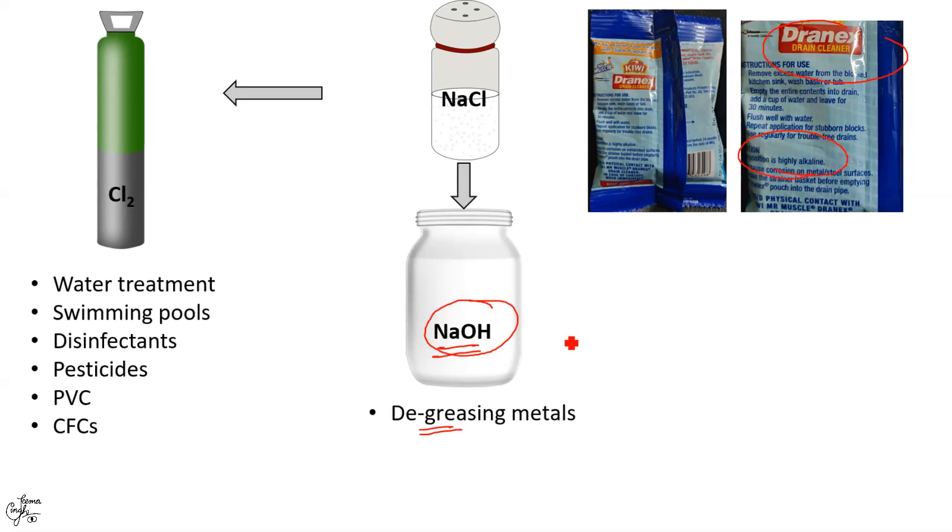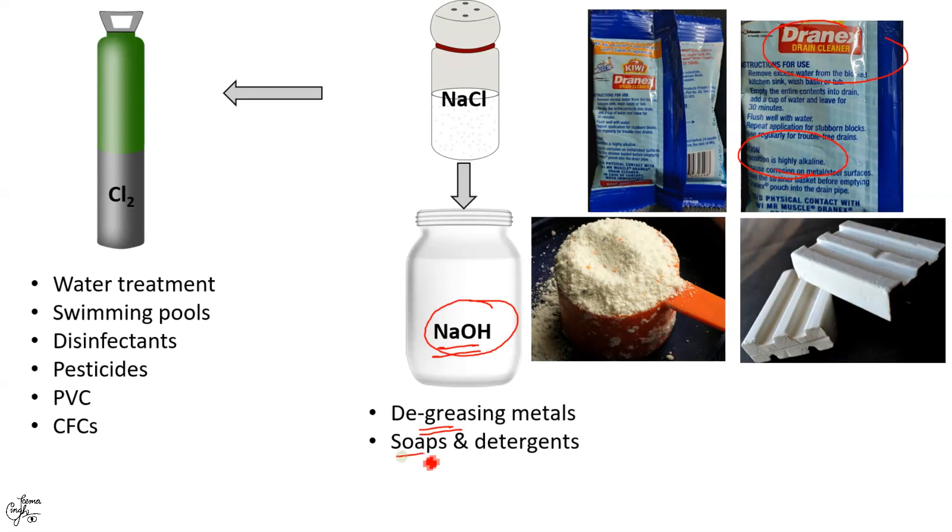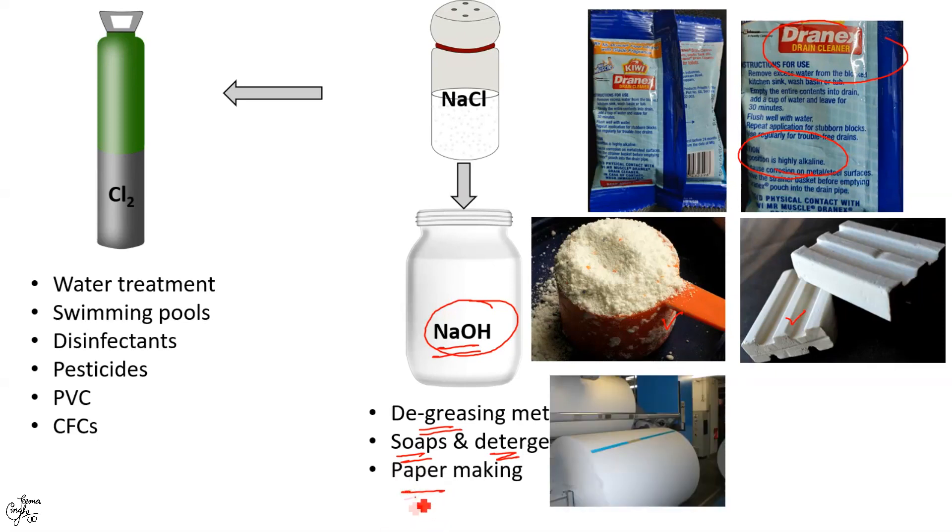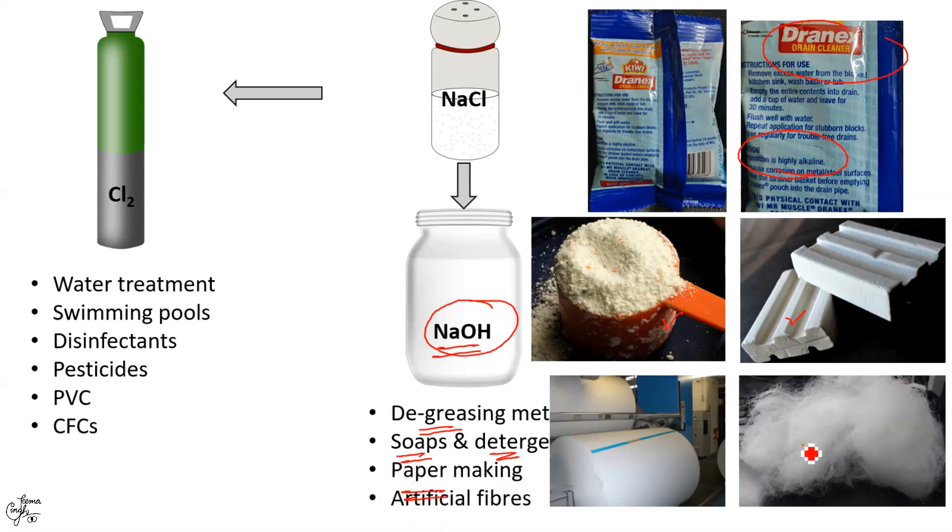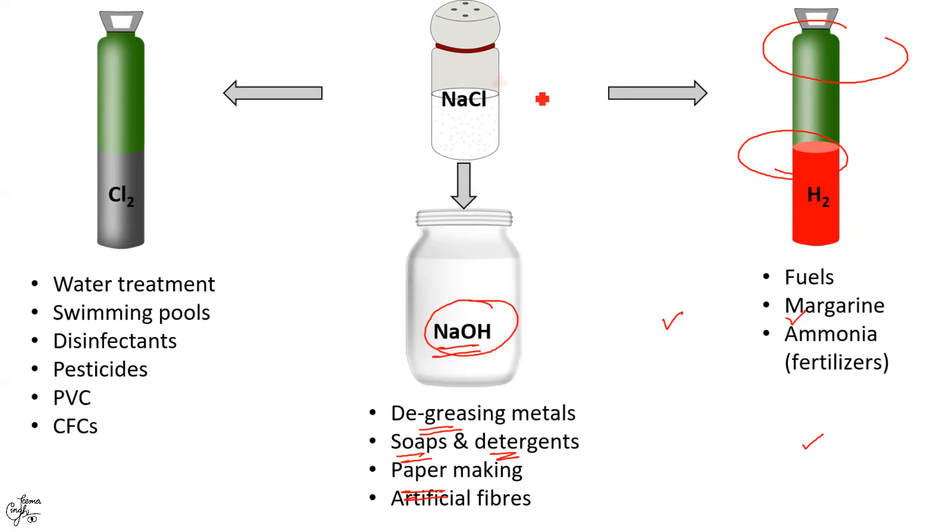Sodium hydroxide is also used in the manufacture of soaps and detergents. NaOH also finds a major use in paper making as well as in the making of artificial fibers. These were the individual uses of the three products formed from electrolysis of common salt.